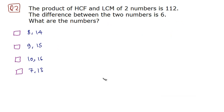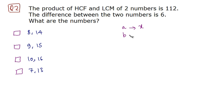Now let's move on to question number 2. The product of HCF and LCM of two numbers is 112, and you have been given the difference between these two numbers which is 6. You have been asked to find these numbers. Let's say these two numbers are A and B. Let's assume A to be X, and since the difference is 6, B would be X plus 6.